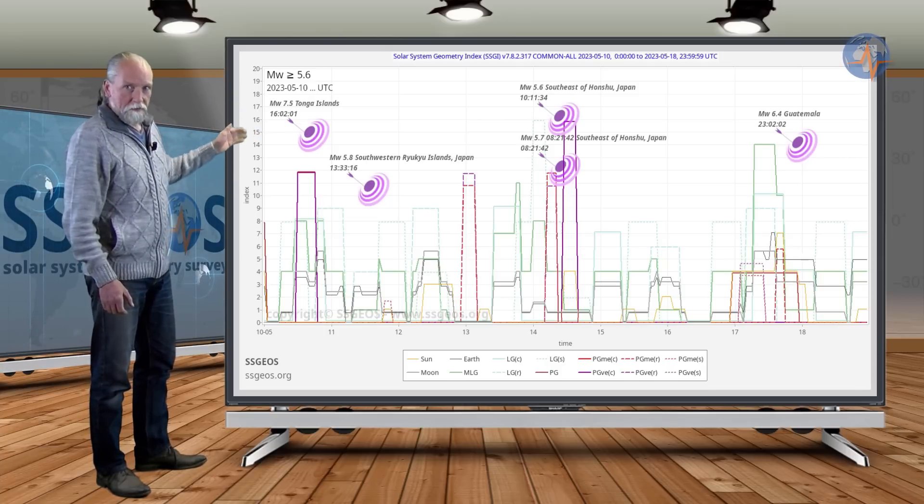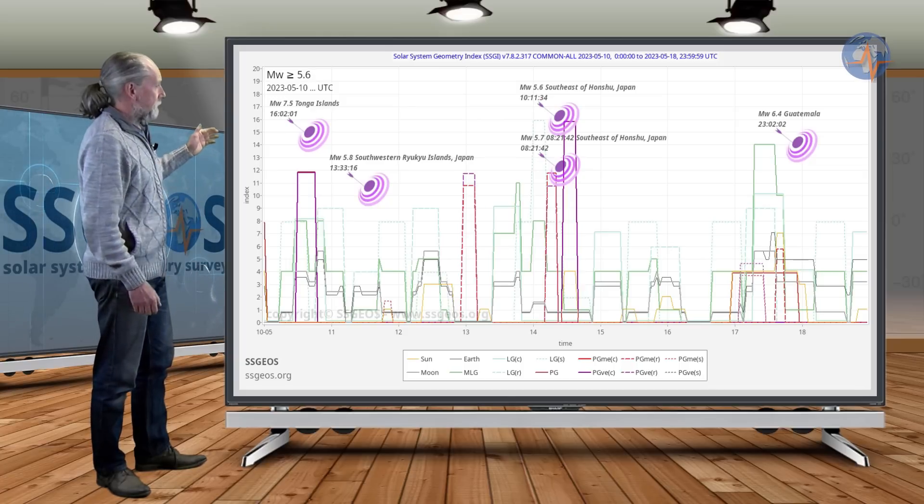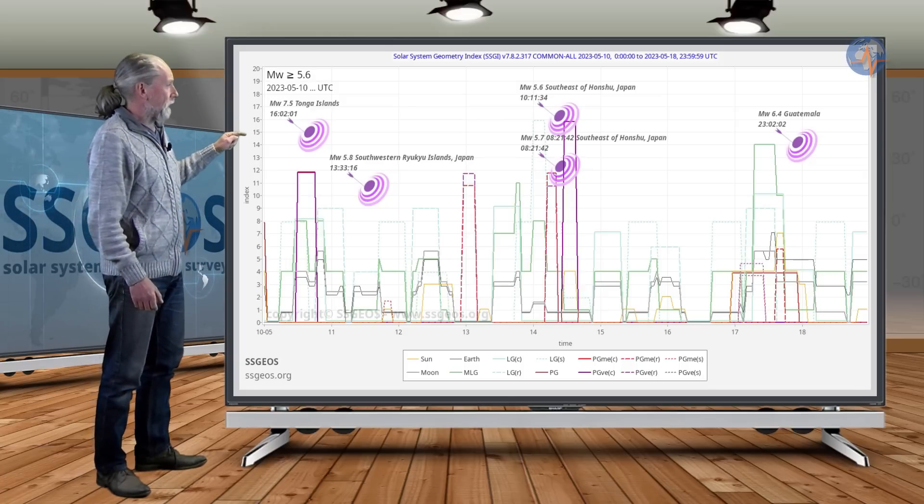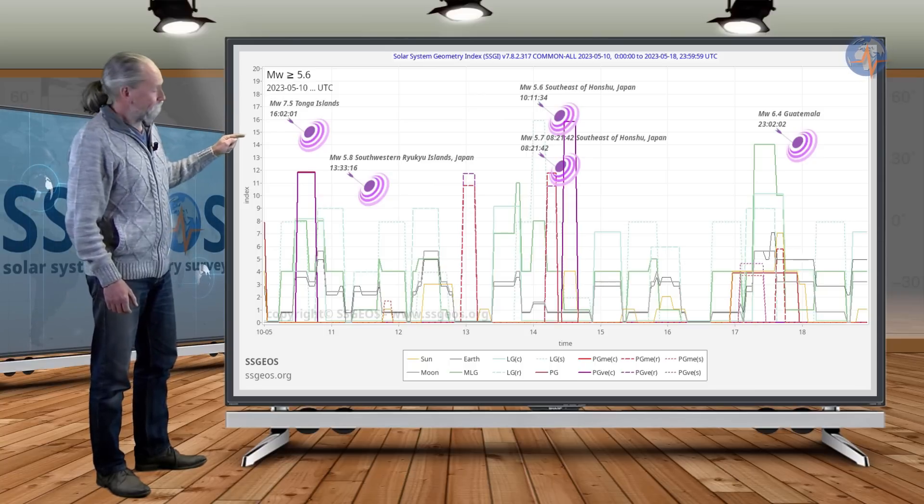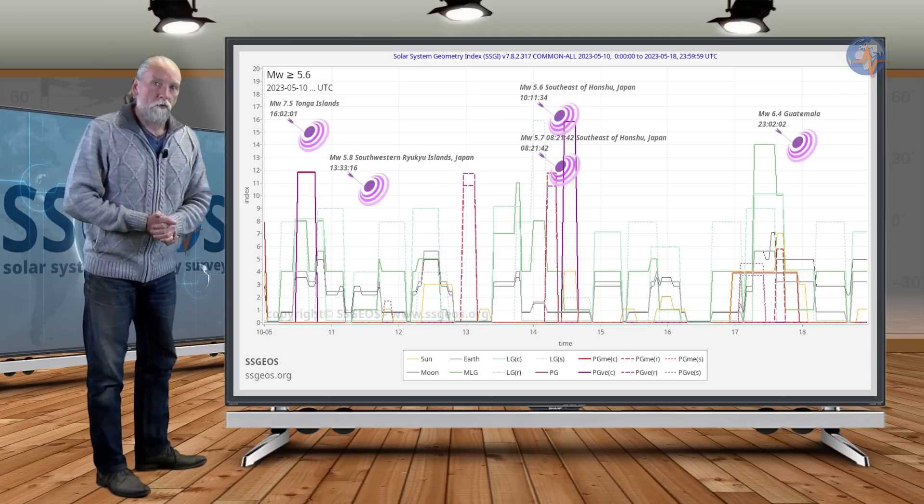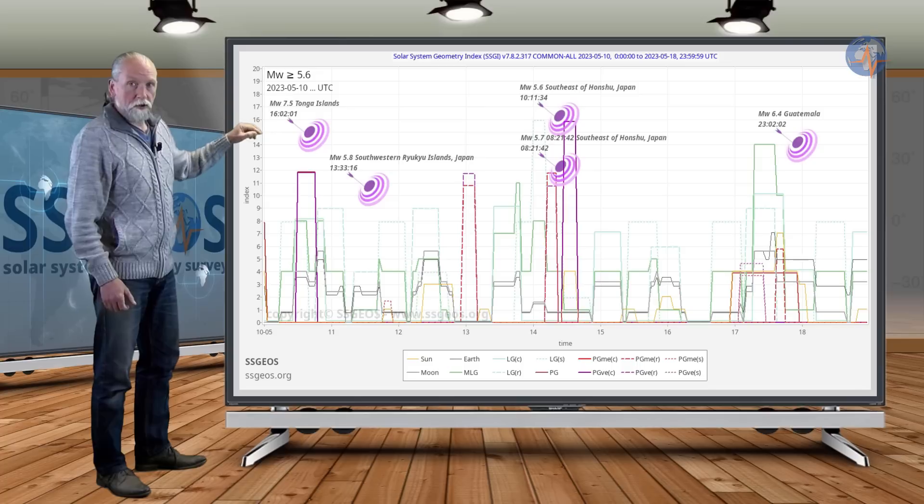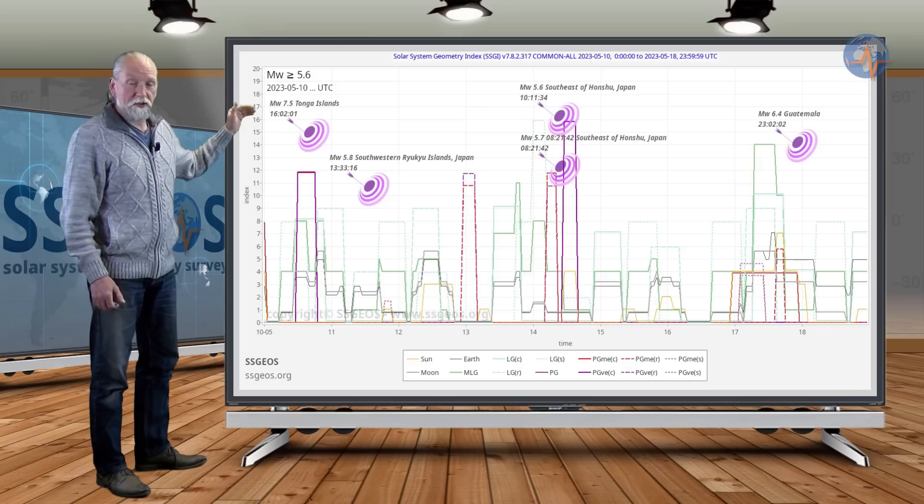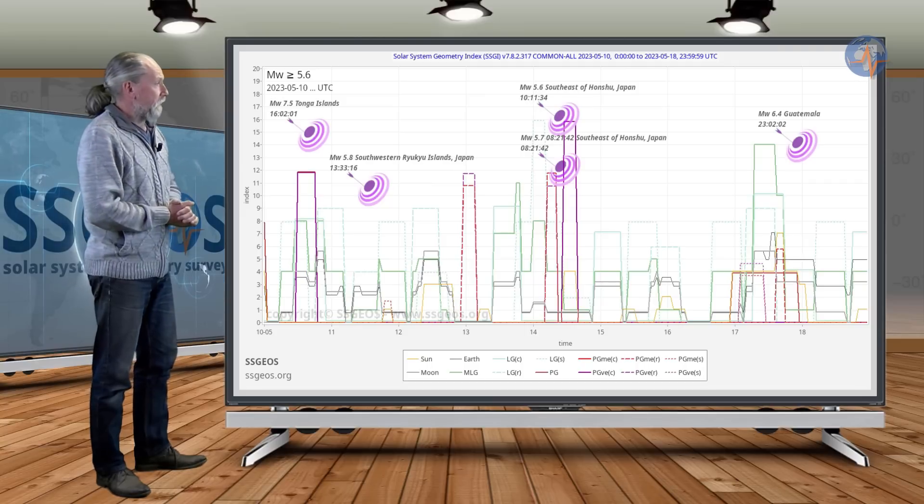It was followed by magnitude 5.9 at the southwestern Ryukyu Islands, Japan. Then with the next critical planetary geometry on the 13th and 14th, we see also a clustering of stronger earthquakes. It just stayed below the 6 magnitude range, up to magnitude 5.9.